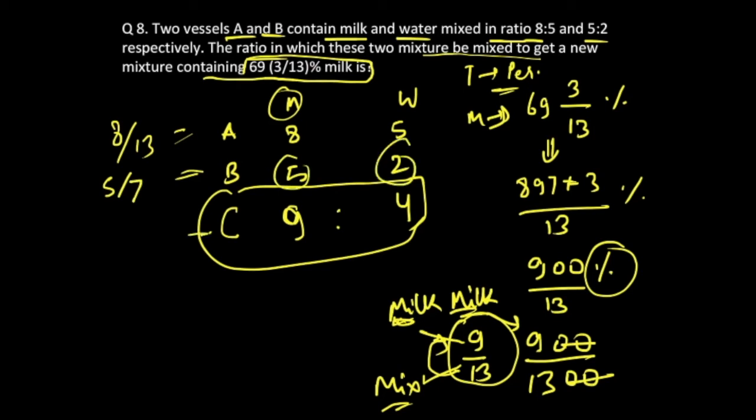And here milk is 9 upon 9 plus 4, which is 13. So we'll use our allegation method. We'll write 8 by 13 here, 5 by 7 over here. The mixed value, this is 9 by 13, this would come in the center.